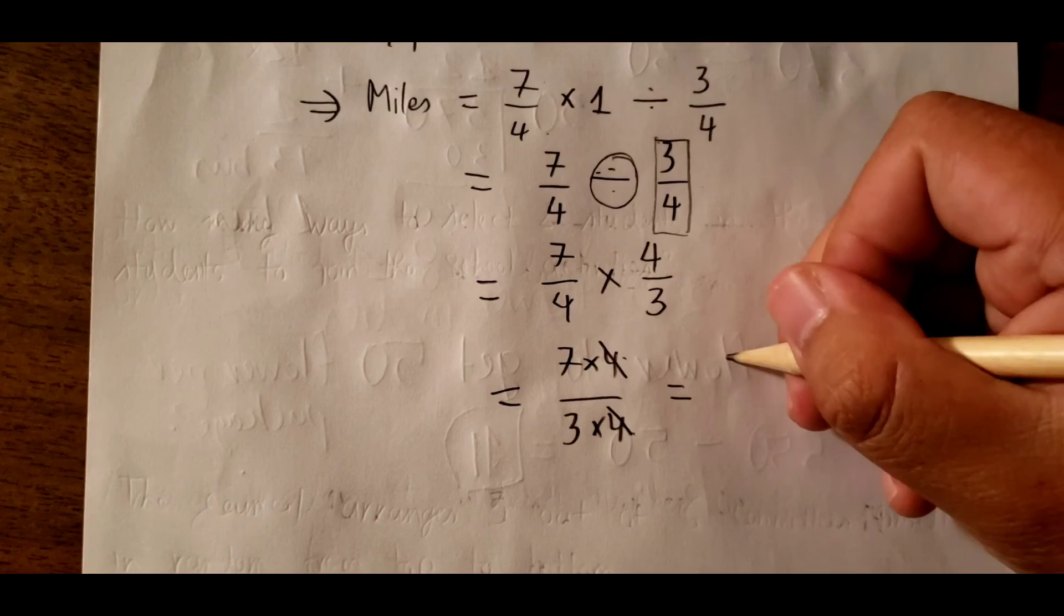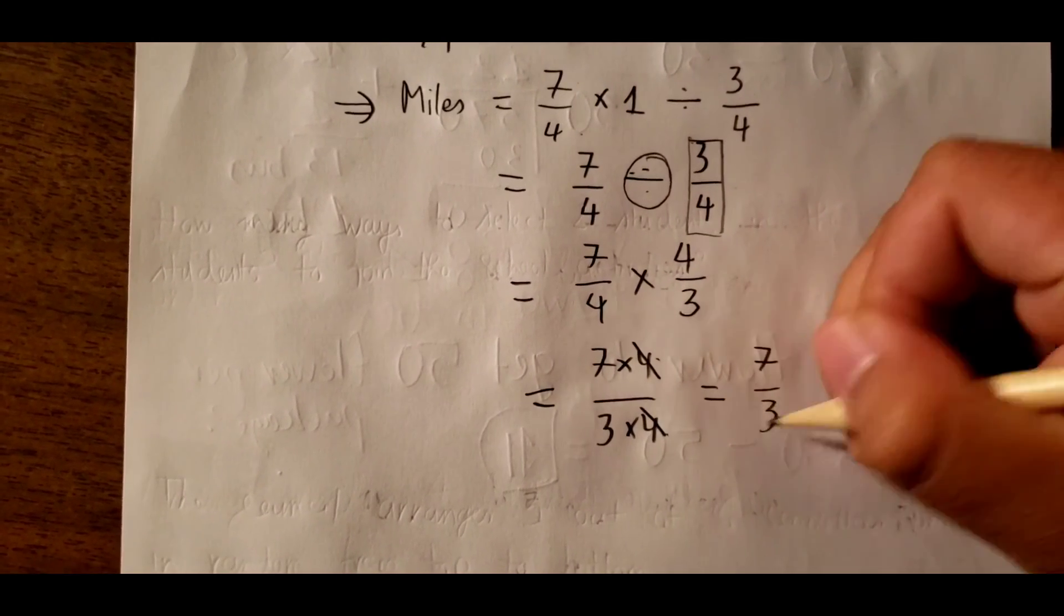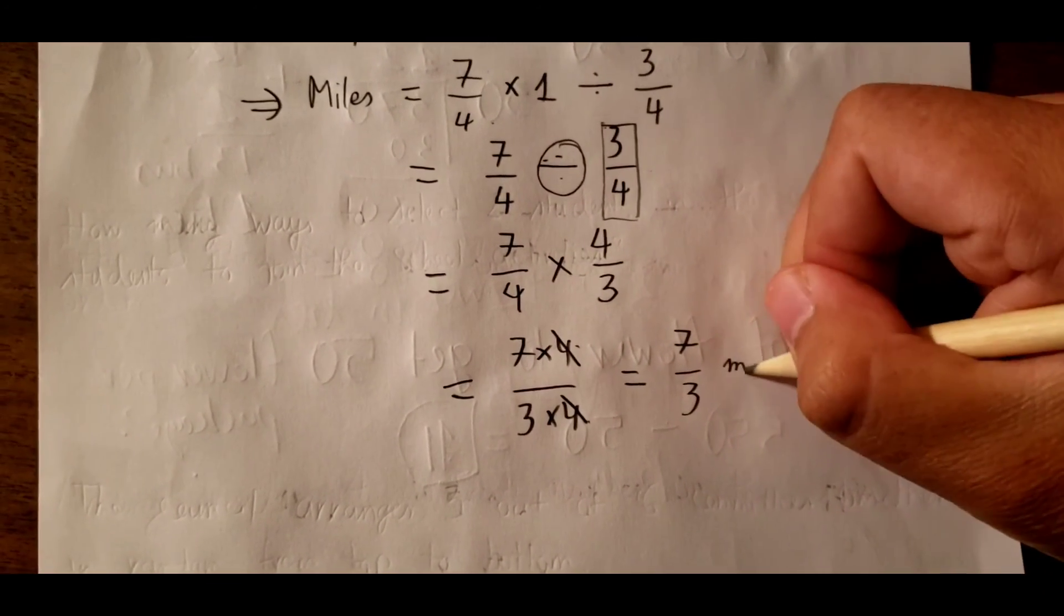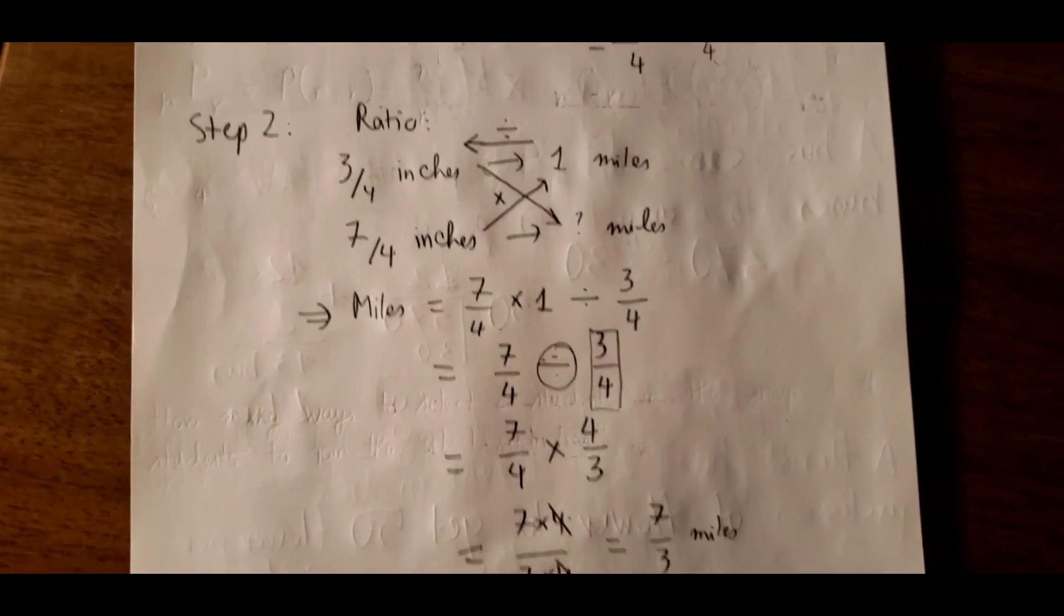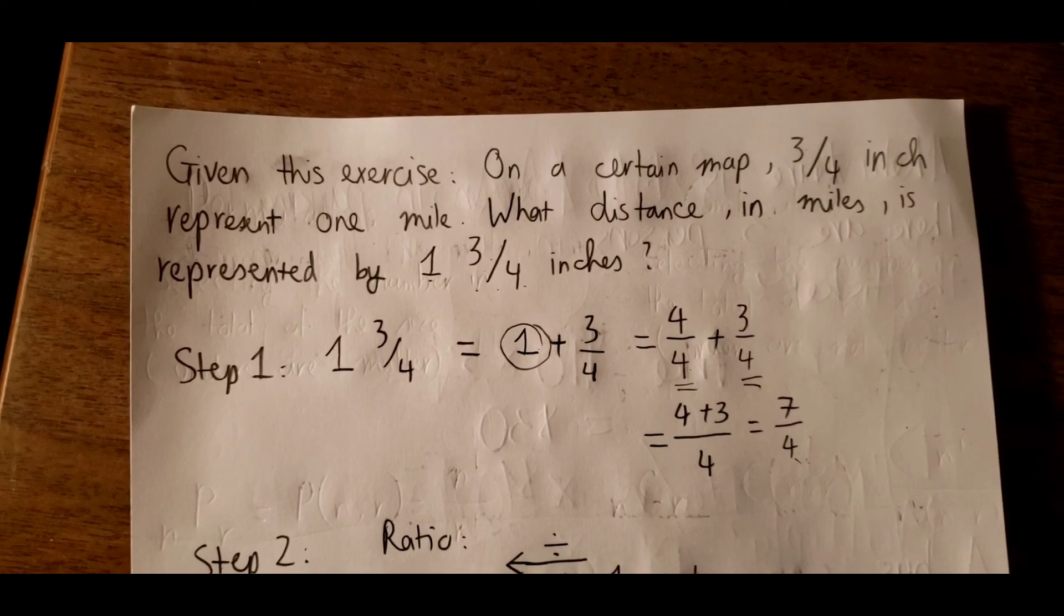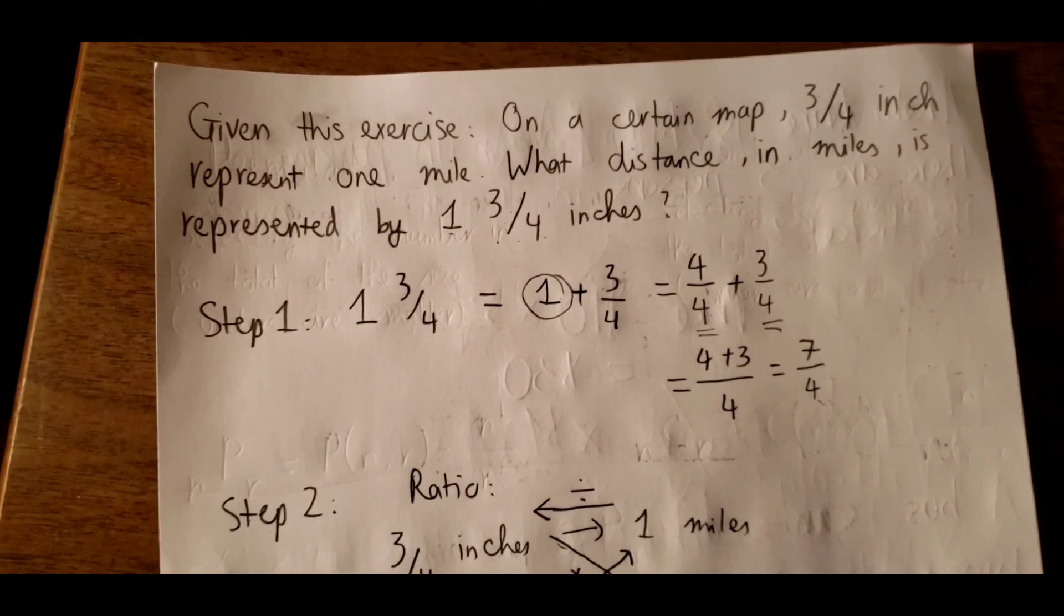So we can get 7 over 3 miles. So that's all the steps for calculating this question. Thank you for watching.